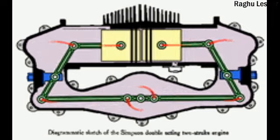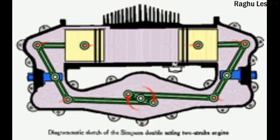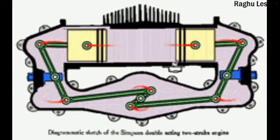With the addition of a scavenging blower or turbocharger, opposed piston designs can make efficient two-stroke cycle diesel engines.